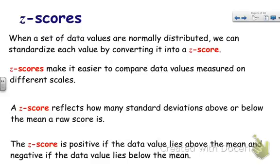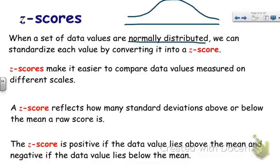The next part of this is z-scores. When a set of data values are normally distributed, we can standardize each value by converting it into a z-score. When I say normally distributed, I mean it follows a normal distribution, or if you've ever heard of the bell curve. Z-scores make it easier to compare data values measured on different scales because they standardize each value. A z-score reflects how many standard deviations above or below the mean a raw score is. A z-score is positive if the data is above the mean and negative if it's below the mean.